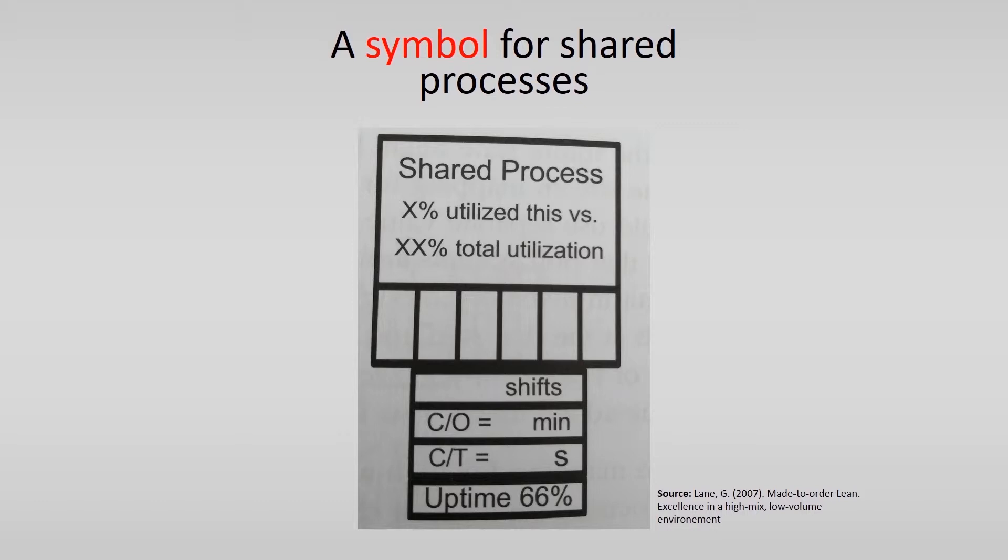When this is the case, it helps to show the percentage of capacity utilized by the value stream that you are mapping, as well as the total current percentage of the process or machine is utilized by all products.